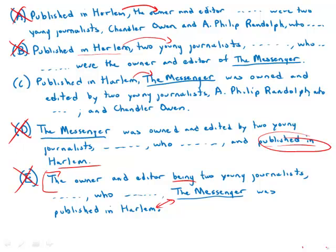That just leaves C. C has: 'Published in Harlem, the messenger was owned and edited by two young journalists' — all perfectly clear. A. Philip Randolph, the great labor leader, is modified appropriately by the clause. C is direct, it is sleek, it is free of grammatical error, and it is by far the best answer choice.